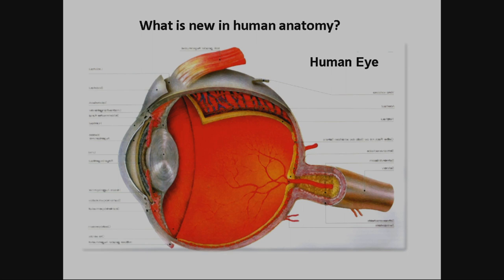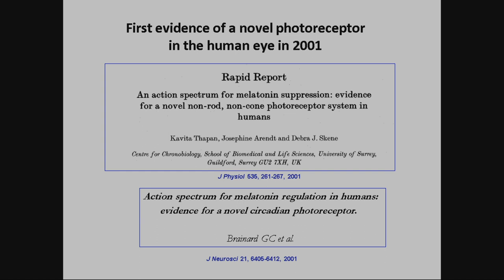Let's come to the ophthalmologist. Because at the year 2000, there was a publication of new photoreceptors. The ophthalmologist said it's bogus, it's not true — there is actually a special photoreceptor in the eye. It was parallel done in the States by George Brainard from NASA research and from Deborah Skene from the Center of Chronobiology in Surrey. They described an action spectrum of an, until then, unknown photoreceptor. It does not really have much to do with vision — it controls the non-visual system in your body.